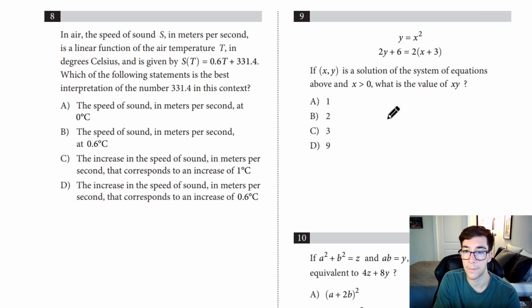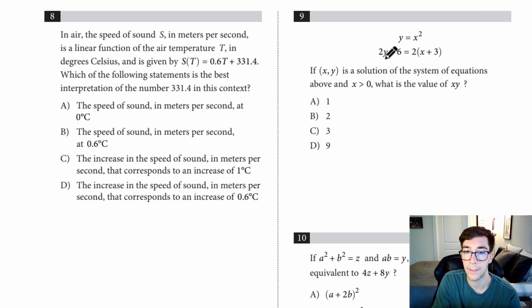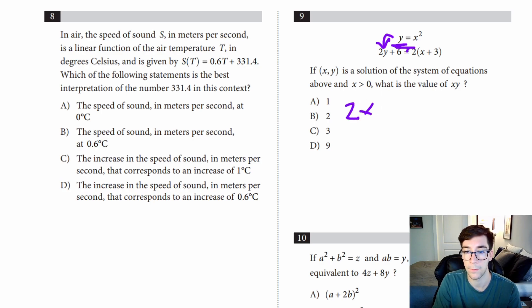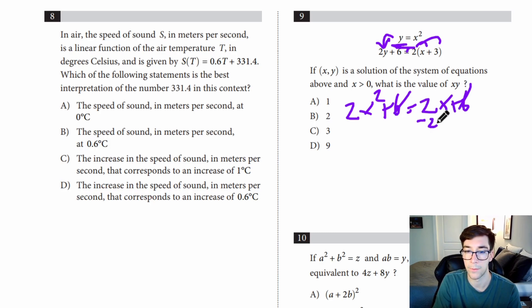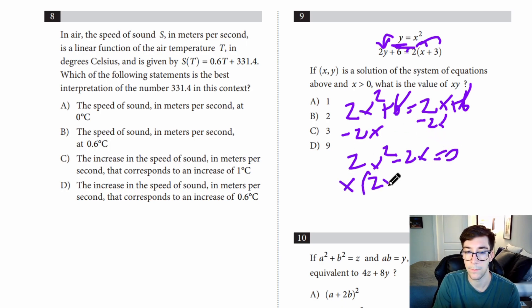Number nine: if X, Y is a solution of the system of equations above and X is greater than zero, what is the value of XY? They tell us Y equals X squared, so we plug that in. We get 2X squared plus 6 equals 2X plus 6. The 6s cancel; subtract 2X from both sides and we get 2X squared minus 2X equals zero. Factor out an X: X times 2X minus 2 equals zero. So X equals zero, but they want the one greater than zero.